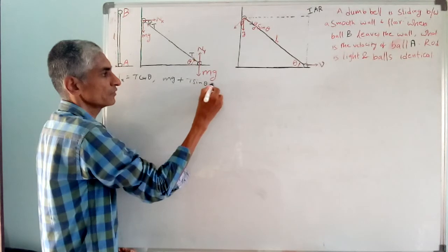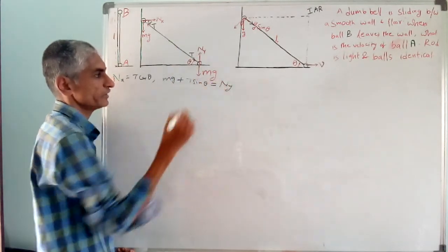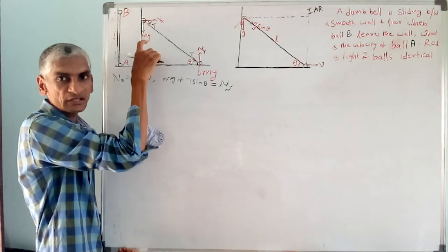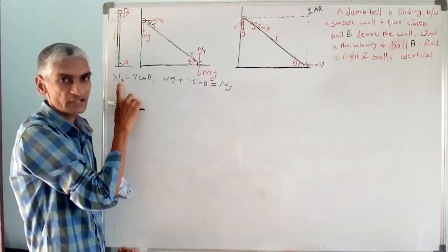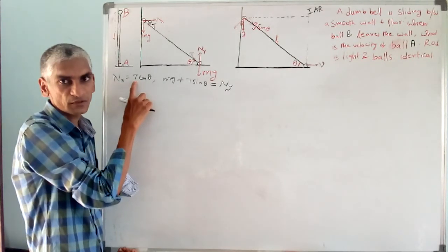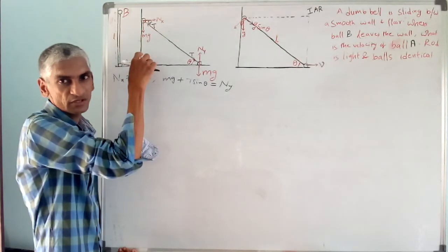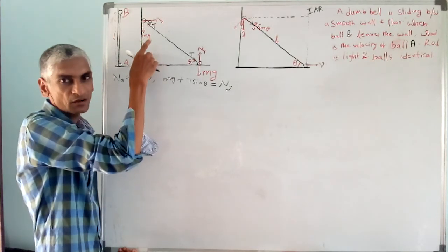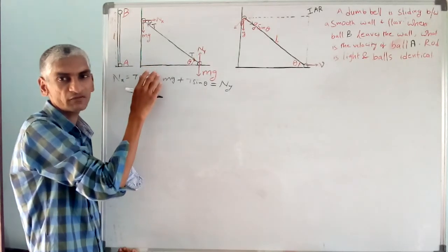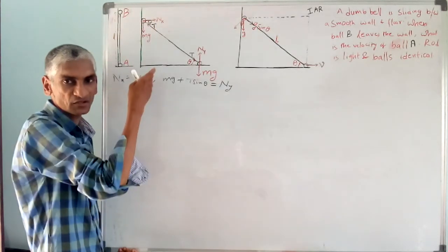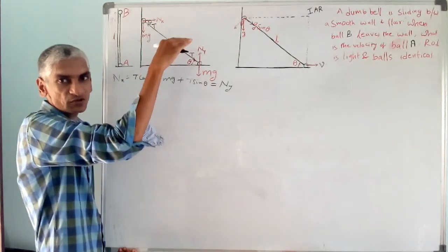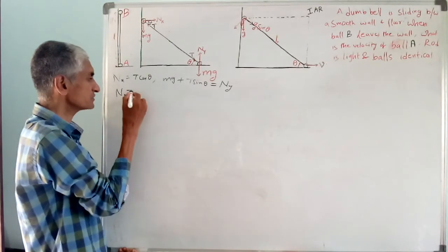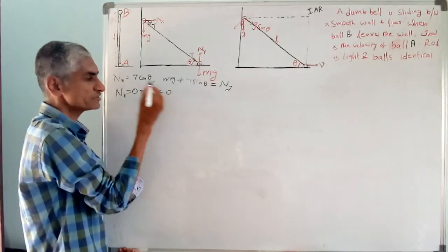From these equations, N_X equals N_Y. Now the condition given is that when ball A leaves the wall, N_X equals zero. When N_X equals zero, since ball A is still in vertical motion at that boundary, its acceleration is still downward and net horizontal force is zero, so T must also be zero.